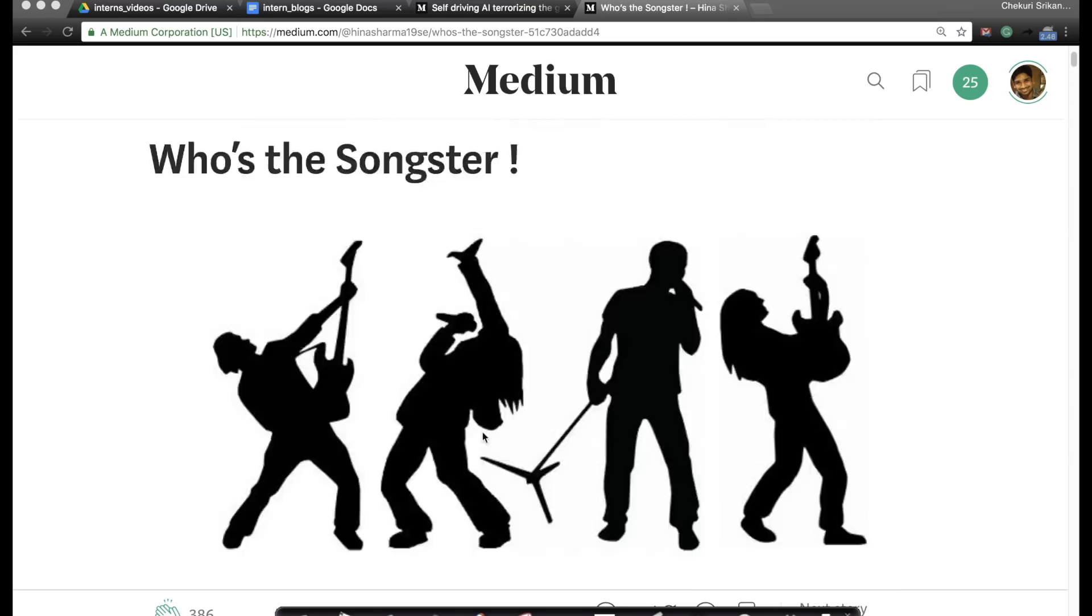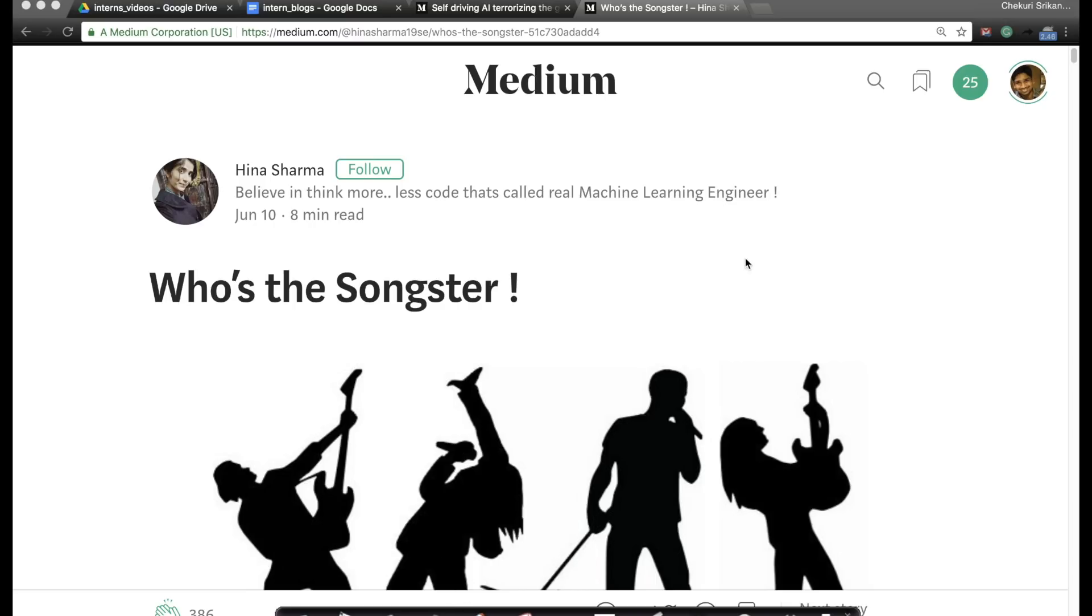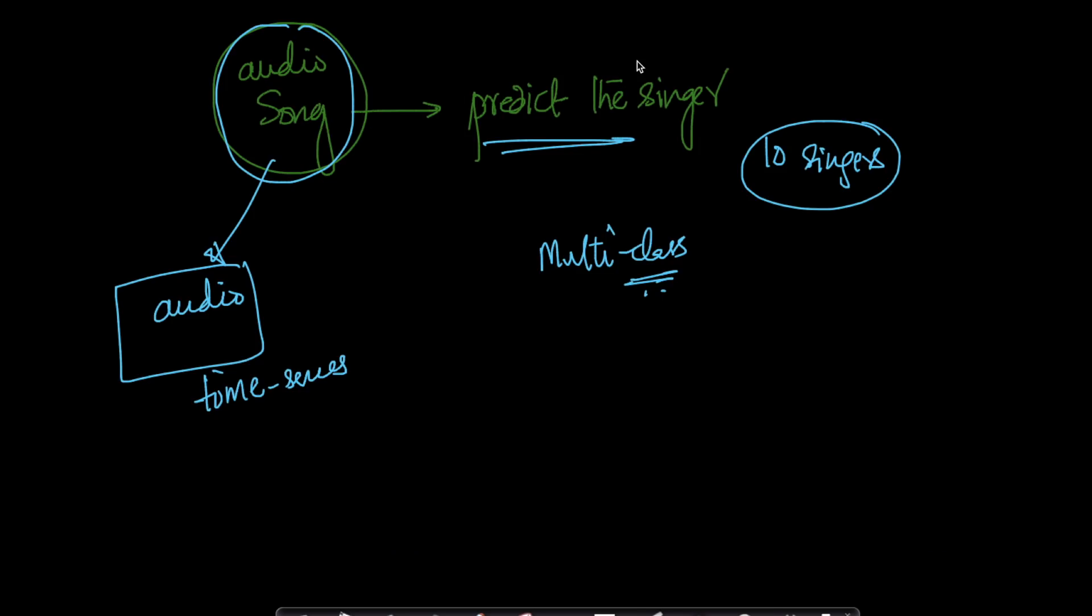This is a very good example where our students are taking a problem that they're very passionate about. In this case, I believe Heena likes Bollywood songs a lot and she said can I predict the singer if you give me an audio snippet? Of course, she didn't know anything about spectrograms or anything like that when she got started.